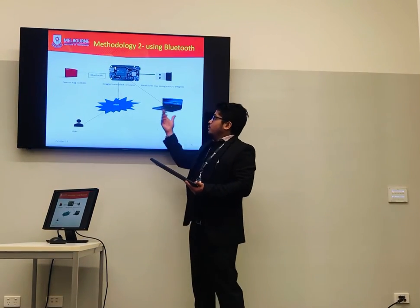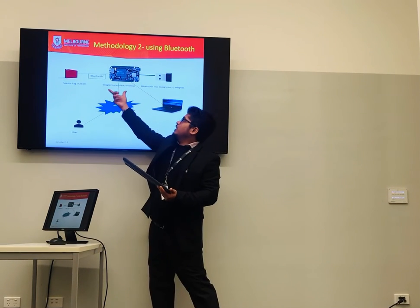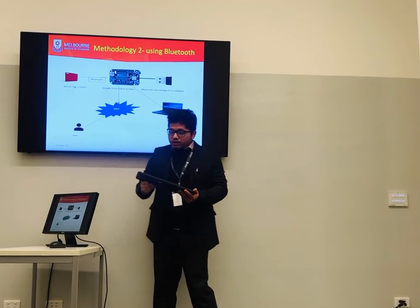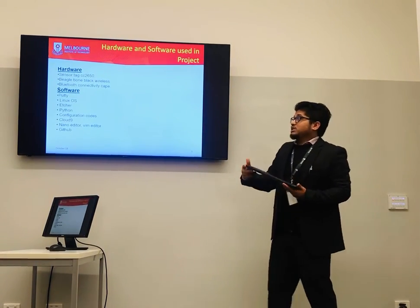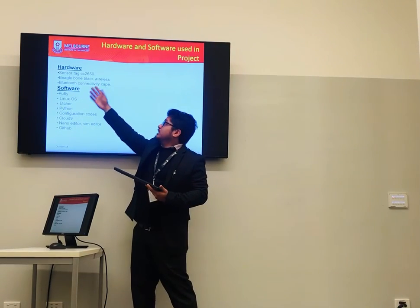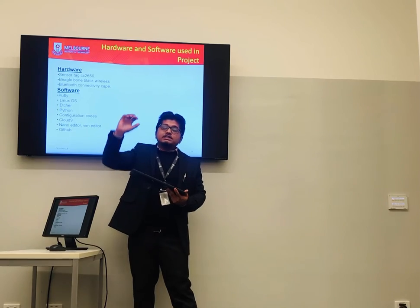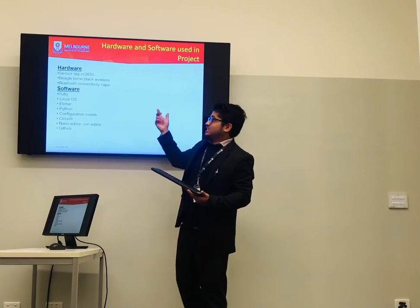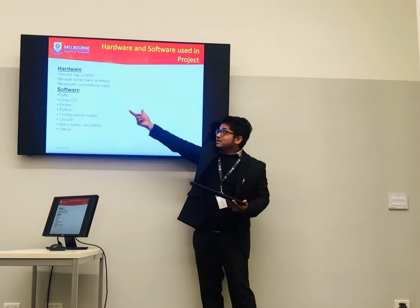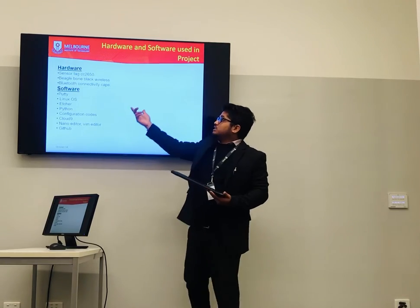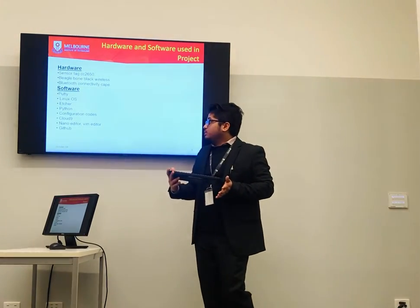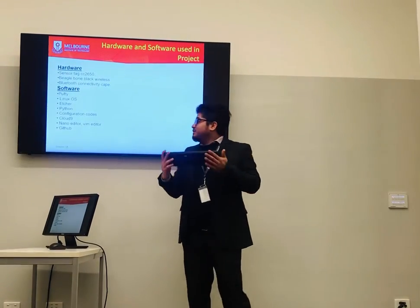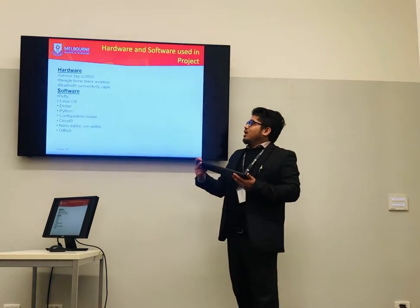This was all done via the PC, and any sensor alert from the BeagleBone Wireless was supposed to be sent to the user. We used the sensor CC2650, which is a smart sensor able to measure up to 10 different parameters including temperature, humidity, light, magnetometer, accelerometer, and more. We used the BeagleBone Black Wireless with the Bluetooth connectivity kit. Software used includes Fuji Linux operating system, Acer, Python, various configuration scripts, CloudNet, NanoEditor, MiniEditor, and GitHub.